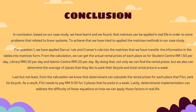From the calculation, we can get the actual rental prices of each place: Student Centre is RM1.50 per day, Library is RM1.30 per day, and Islamic Centre is RM1.20 per day. Not only can we find the rental prices, but we also can determine the average places they like to park their bicycle and the total rental price in a week. Furthermore, the determinant can calculate the rental prices for each place that Fitri parked his bicycle. As a result, Fitri needs to pay RM9 for 3 places that he parks in a week. Determinant implementation can address the difficulty of linear equations and show how we can apply those factors in real life.